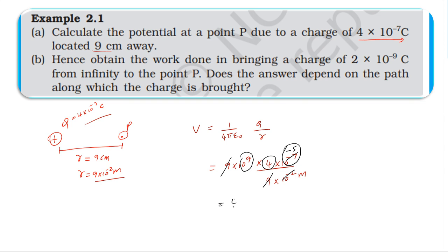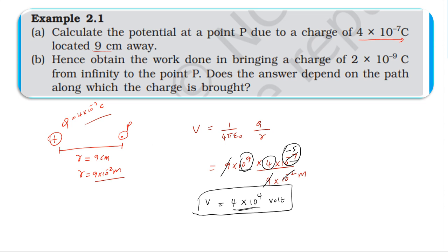So we have 4 multiplied by 10⁴, and the unit of potential is volt. Therefore, the potential at a point 9 centimeters away from this charge is 4×10⁴ volts.